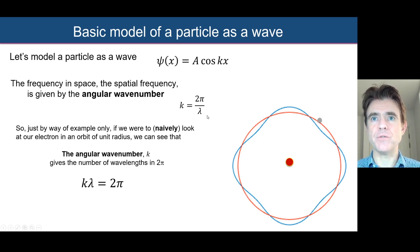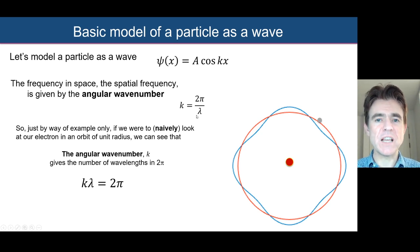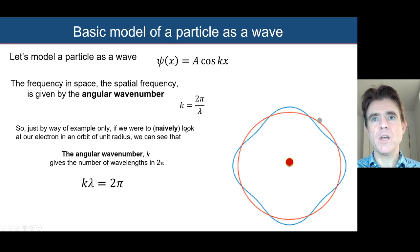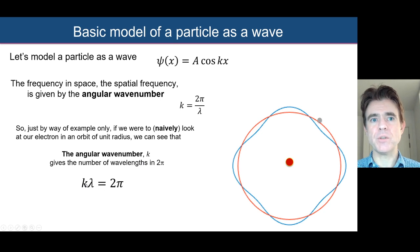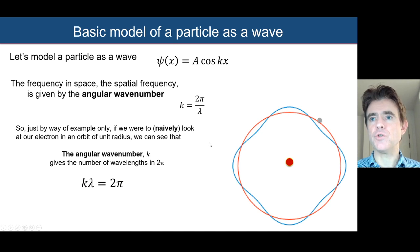In general, k × lambda fits into 2π. So if k equals 2, we get two wavelengths fitting within 2π. In the context of an electron orbit around the nucleus of a hydrogen atom, we can consider k as the number of wavelengths fitting in an interval of 2π.